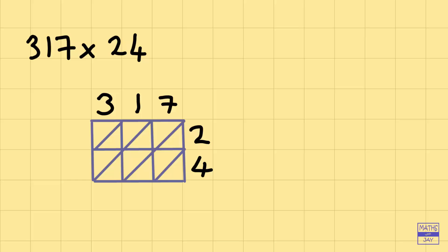So it doesn't matter where we start now, but let's start at the top left-hand corner. Multiplying 3 by 2 gives us 6, so we want to put in 0 and 6 in our first square. Multiplying 1 by 2 is 2, so 0, 2 in our second square. And then in our next square, 7 times 2 is 14, so 1 and 4, either side of the diagonal here.